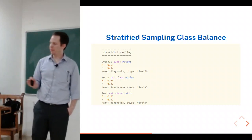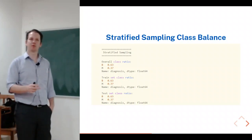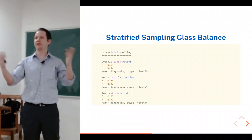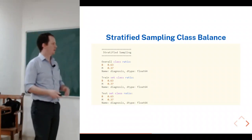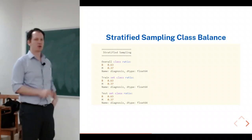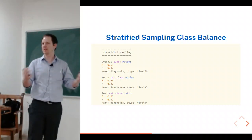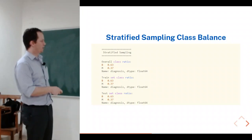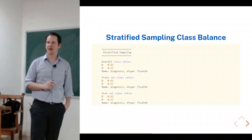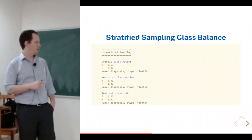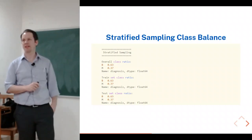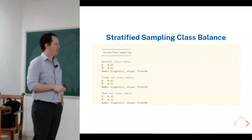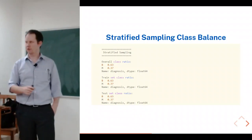If you're using accuracy as a metric, this is really important. People often think of 50-50 as a random baseline, but that's not always the case with imbalanced classes. If you just called everything benign, you'd be 63% accurate in this dataset. So you want to make sure those metrics are comparable between training and testing sets.